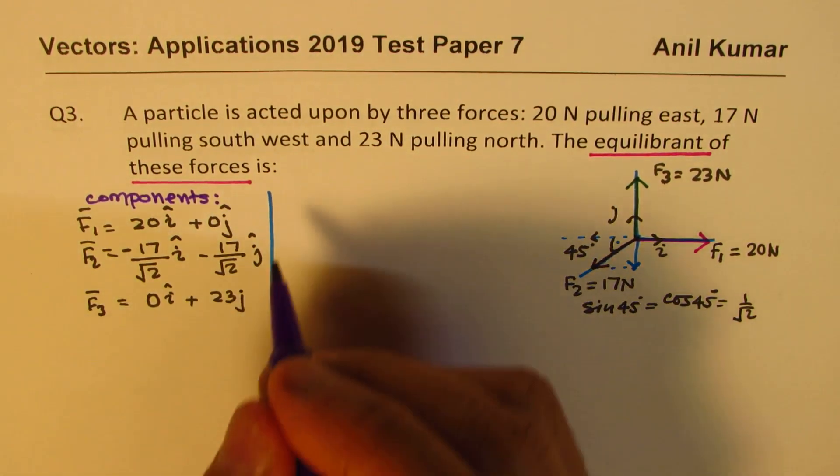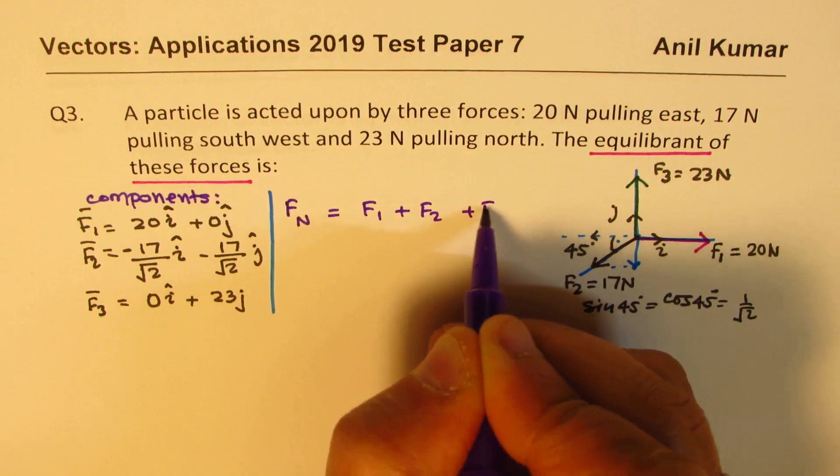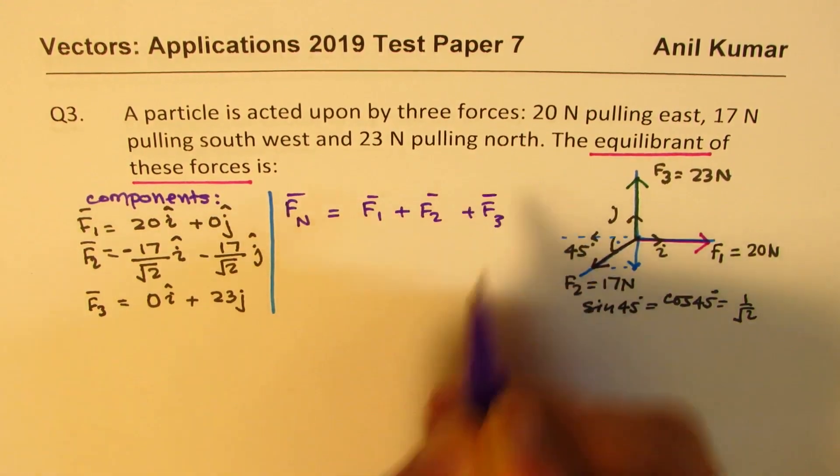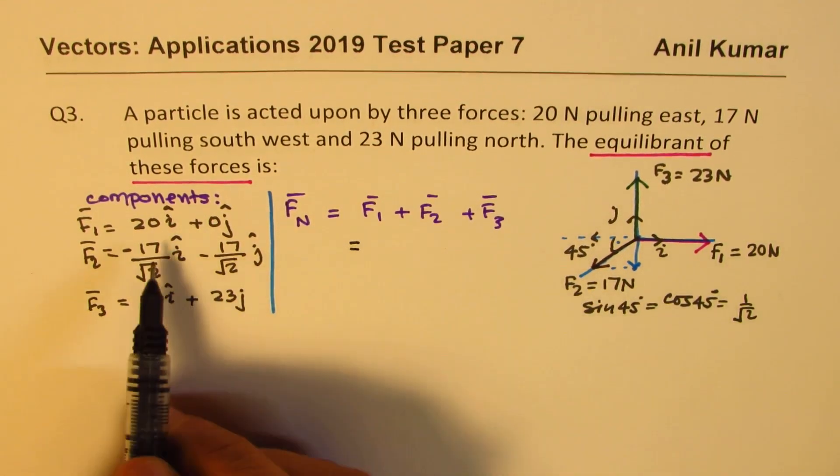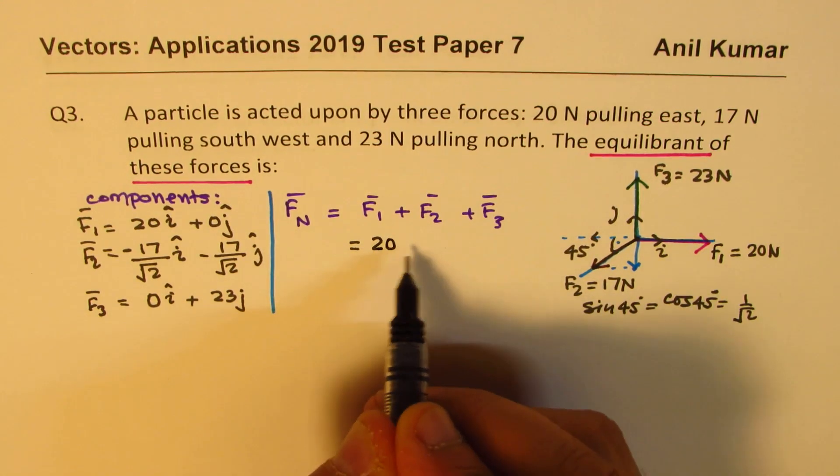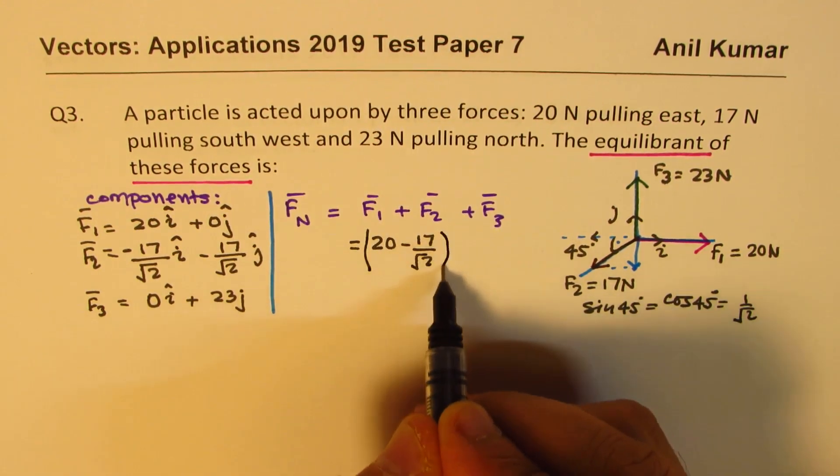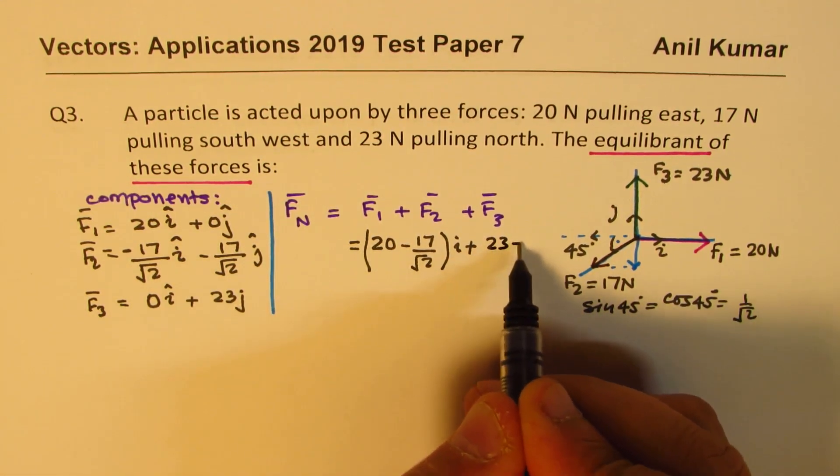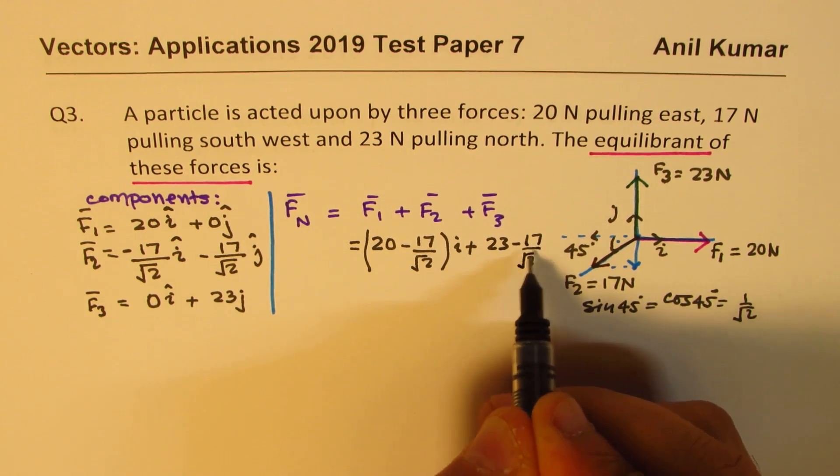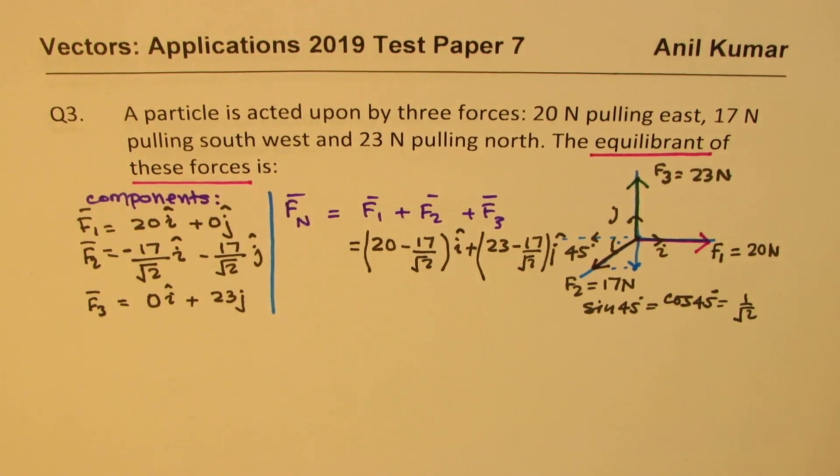So if I combine all of them, the net force Fn will be F1 plus F2 plus F3. These are vector forces. So the net force will be how much? Let us combine them. So i components are 20 minus 17 over square root 2. Plus j components are 23 minus 17 over square root 2.